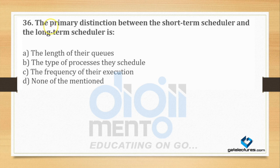Question number 36: The primary distinction between the short term scheduler and the long term scheduler is what? The options are: the length of their queues, the type of processes they schedule, the frequency of their execution, or none of the above.